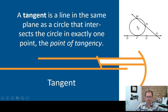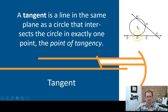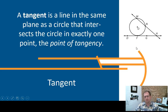What is a tangent? A tangent is a line in the same plane as a circle that intersects the circle at exactly one point. If you have two lines intersecting the circle, line MH is not a tangent because it intersects it twice. Line DG is a tangent because it only intersects it once. That place where the circle intersects the line is called the point of tangency.